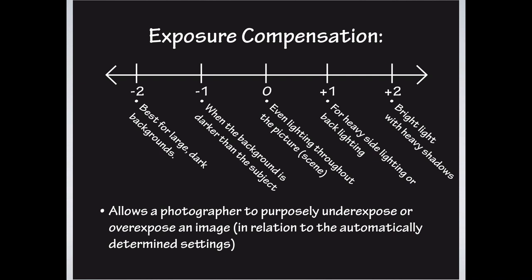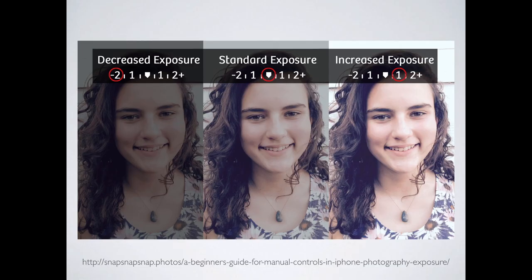Exposure compensation is a little bit different than exposure value — they sound similar but they're different. Anybody on their phone ever touched the image and dragged up and down to make it darker or lighter? That's exposure compensation. You're saying the camera thinks this is the correct exposure, but you at your eye say it's not quite right — let me make it a little bit darker or lighter. You're compensating from what the camera thinks is correct, which is zero, to deliberately darkening or lightening that particular image. Our standard exposure is in the center; on the left we've deliberately darkened, on the right we've deliberately lightened.